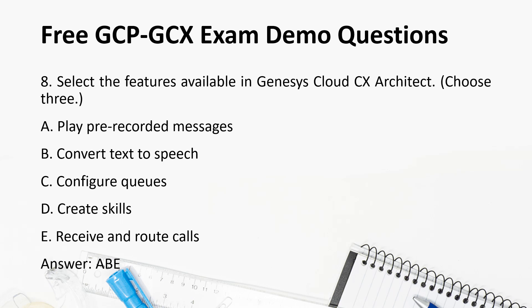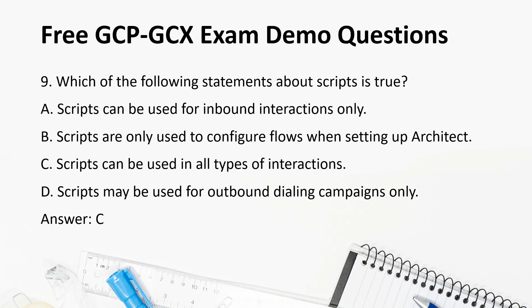Question 8: Select the features available in Genesis Cloud CX Architect. Choose 3. a. Play pre-recorded messages, b. Convert text to speech, c. Configure queues, d. Create skills, e. Receive and route calls. Answer: a, b, e.